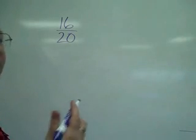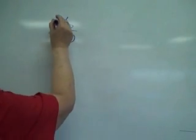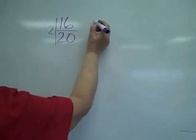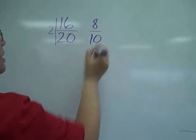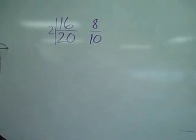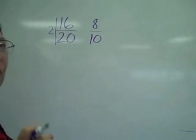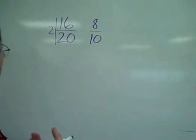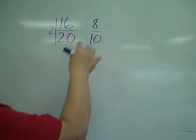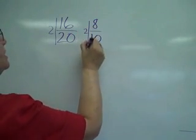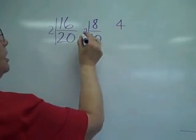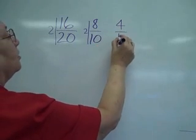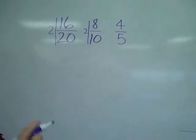What if I have a fraction 16 twentieths? I look at it and I say, oh, they're both even. I know I can divide by 2. 2 into 16 is 8. 2 into 20 is 10. Now, as I look at the 8 and the 10, I say, oops, I could have chosen another factor because these are both still even. 2 into 8 goes 4 times. 2 into 10 goes 5 times.